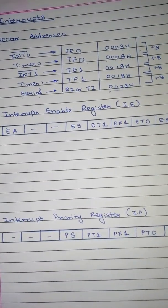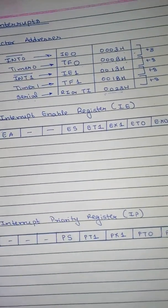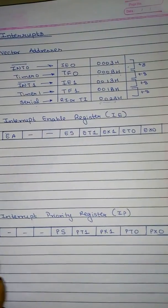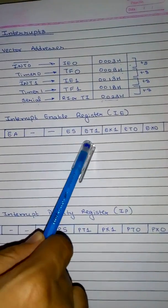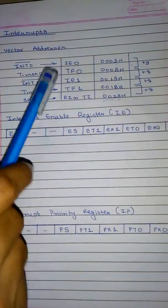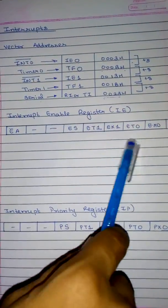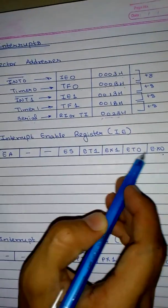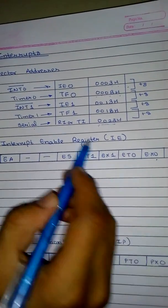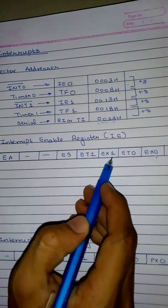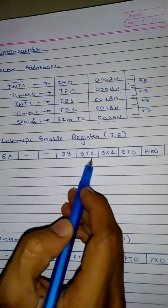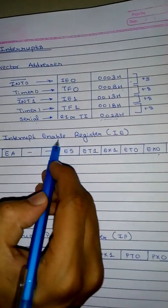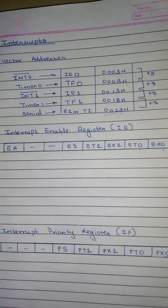Now we have the Interrupt Enable Register and the Interrupt Priority Register. The Interrupt Enable Register is a bit-addressable SFR. It has the bits: EA, ES, ET1, EX1, ET0, EX0. To remember this: EX0 is INT0 bar, ET0 is Timer 0, EX1 is Interrupt 1 bar, ET1 is Timer 1, and ES is serial. The 'E' stands for enable.